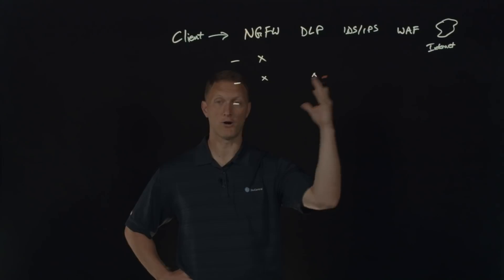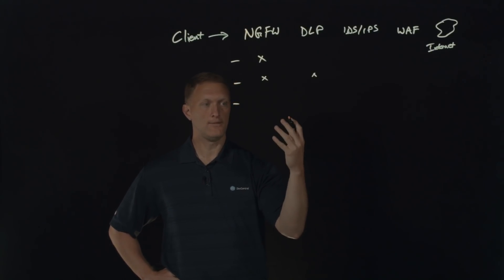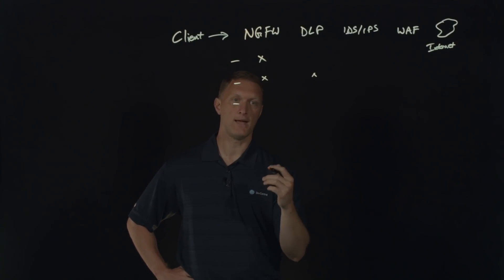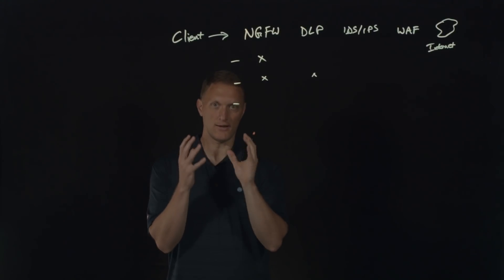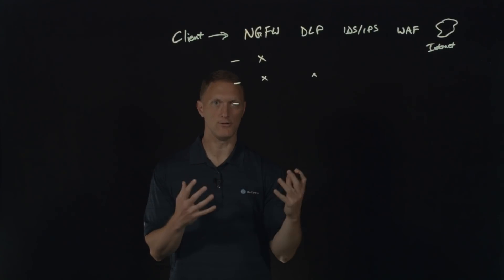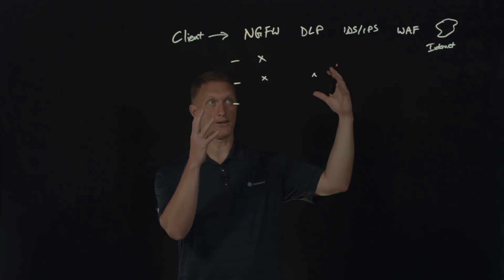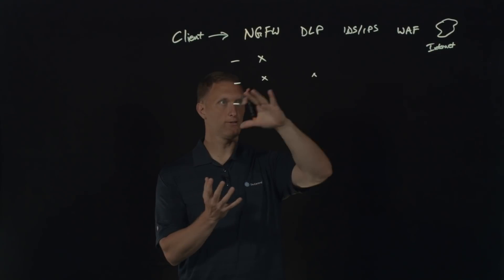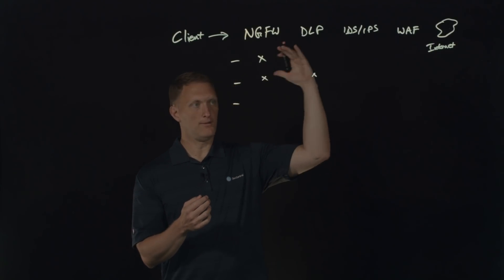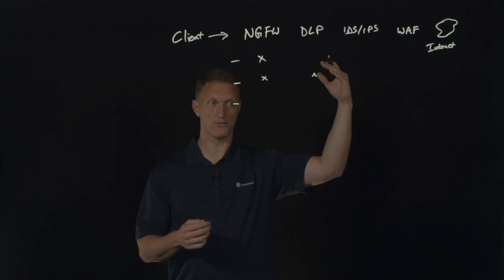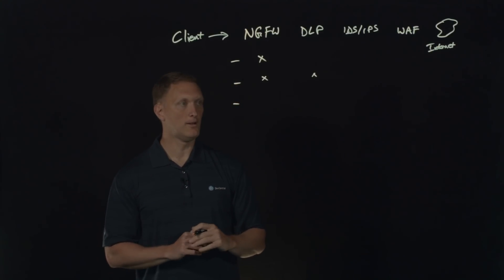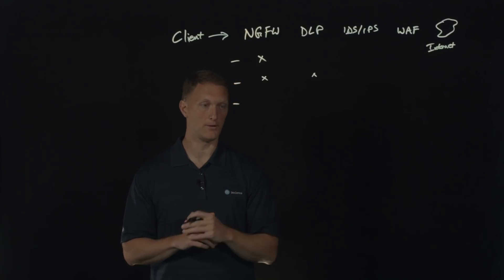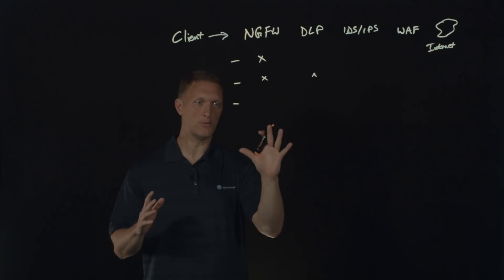Another huge issue with daisy chaining is that many of these devices are not built to inherently offload SSL/TLS traffic. The SSL/TLS offload itself is such a computationally expensive thing that companies end up having to go two or three versions above the device they actually need, because they have to handle the SSL/TLS offload on top of everything else. They basically oversize their purchases like crazy.